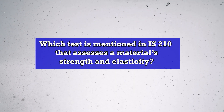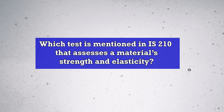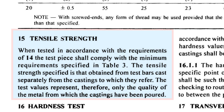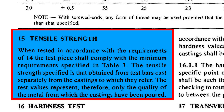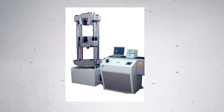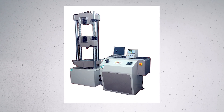Moving to testing parameters — which test mentioned in IS-210 assesses a material's strength and elasticity? That's the tensile strength test mentioned in Clause 15 of IS-210. On which machine is the tensile strength test conducted? The tensile test is conducted on a Universal Testing Machine, UTM.